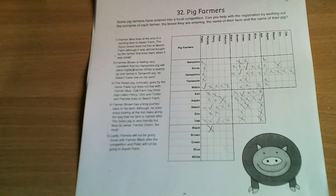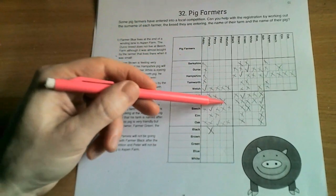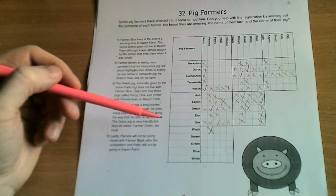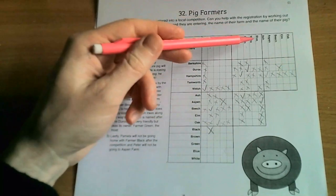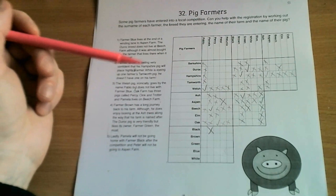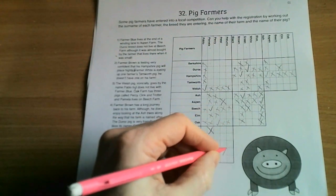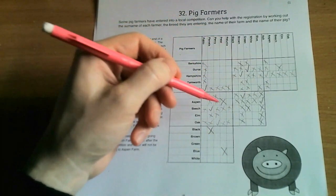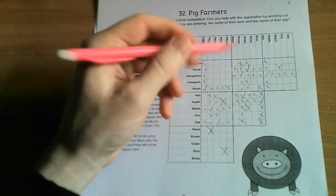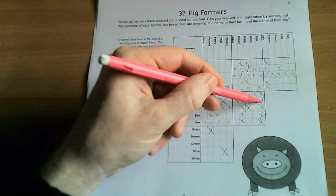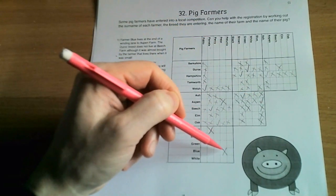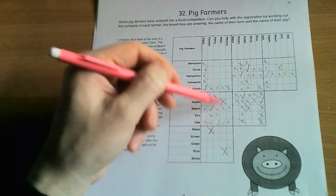So now it's a case of just going through and cross-referencing, gradually trying to find connections that we can make based on what we already know. As another example, we can see that Peter does not live on Aspen Farm, but we know that Farmer Blue is based at Aspen Farm, and therefore we know that Peter and Blue are not connected, because if he was, then he'd have to be at Aspen Farm.